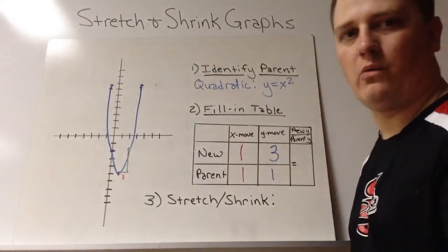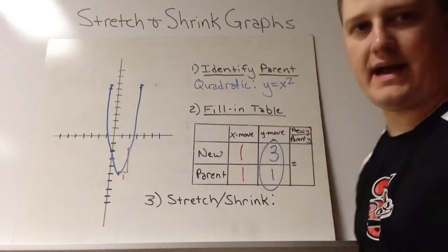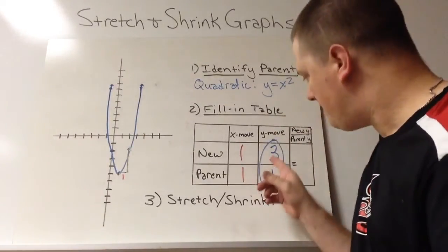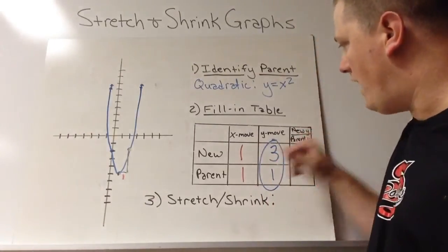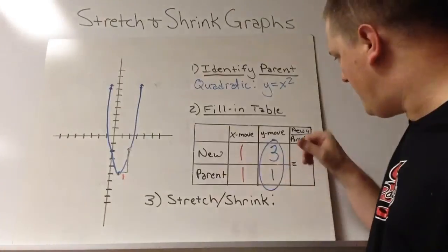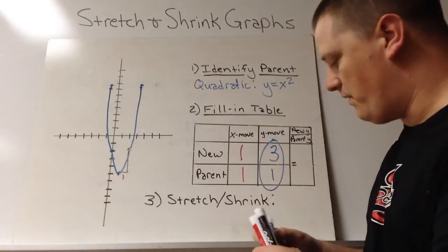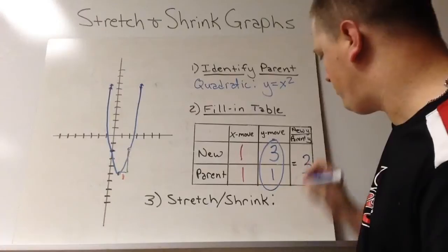So now what we can do is we can take these two. The reason I have the table set up like this is it makes a division problem. 3 divided by 1. This is new y divided by parent y. So 3 divided by 1 is 3.